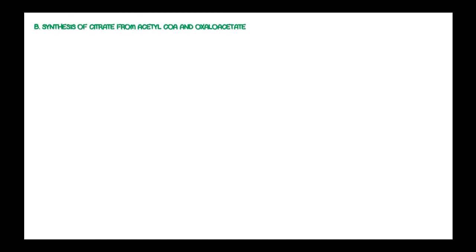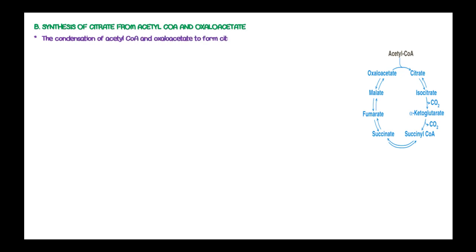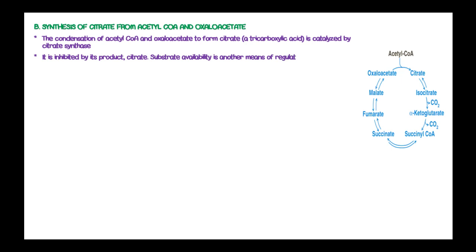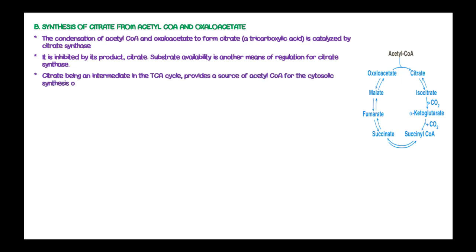The second step in the Krebs cycle is synthesis of citrate from acetyl-coenzyme A and oxaloacetate. The condensation of acetyl-coenzyme A and oxaloacetate to form citrate, known as a tricarboxylic acid, is catalyzed by citrate synthase and is inhibited by its product, citrate. Substrate availability is another means of regulating citrate synthase. Citrate, being an intermediate in the tricarboxylic acid cycle, provides a source of acetyl-coenzyme A for cytosolic synthesis of fatty acids, and citrate also inhibits phosphofructokinase and activates acetyl-coenzyme A carboxylase.